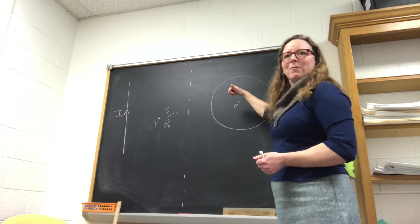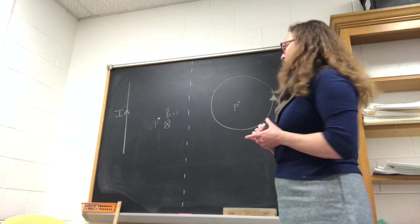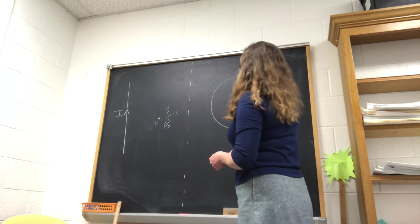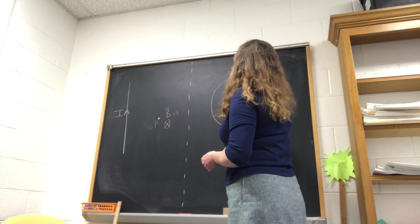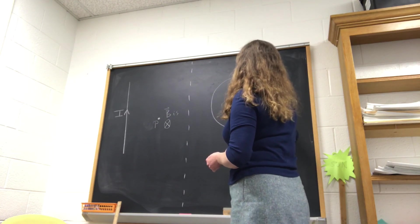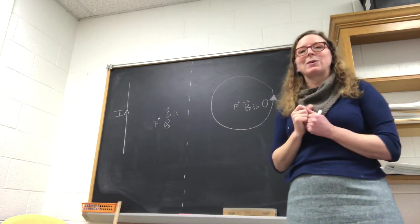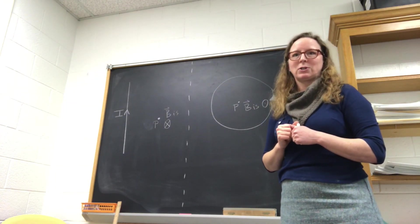and that tells us that the magnetic field is pointing out of the board. So in this case, B is coming out of the board. And that's two examples of how to use the curly straight rule.